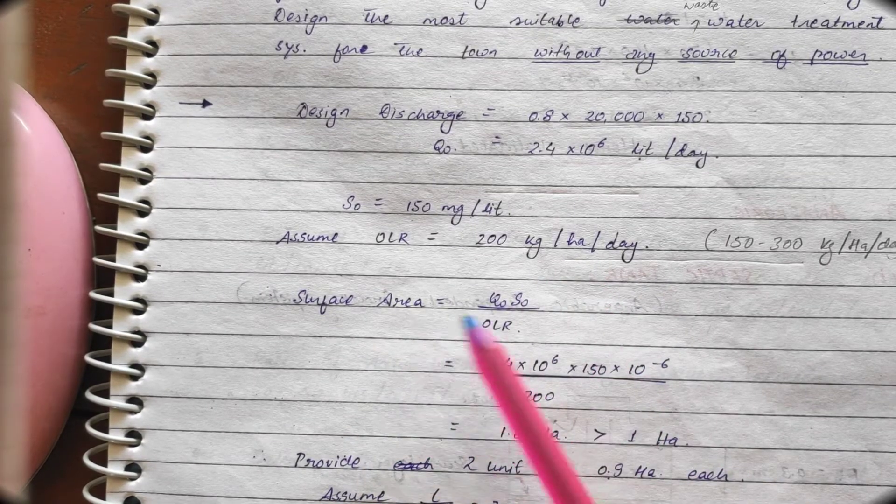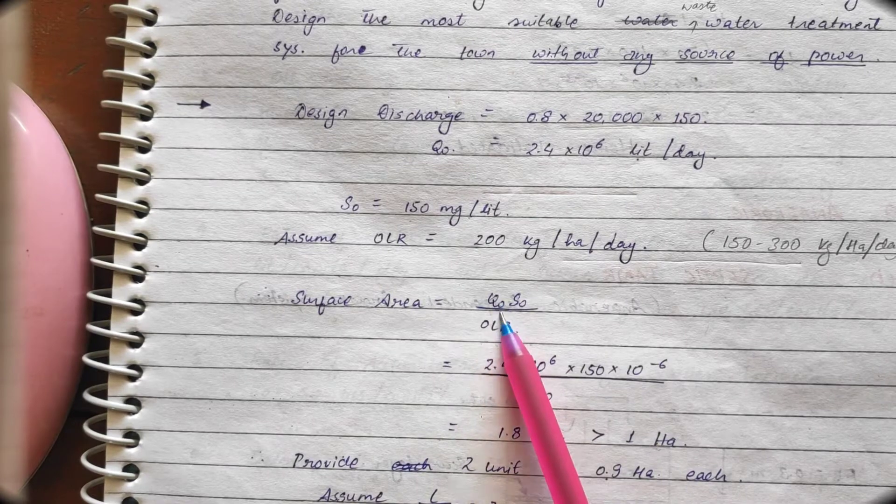Now, whenever we get the surface area, we are getting in hectares. So, Q0 is known.